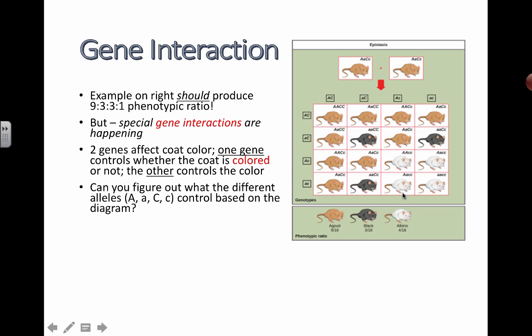So let me study that. So over here, if there's a big A, if there's any big A present, these guys all look like they're brown. And if there's no big A present, in other words homozygous recessive for little a, then they end up being black.